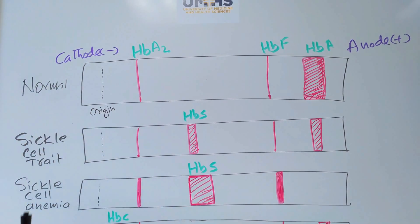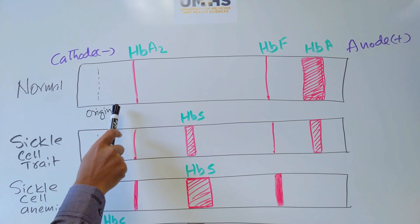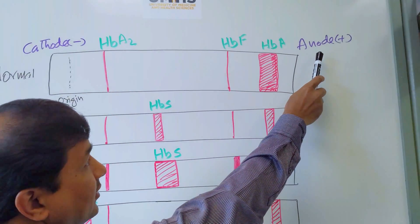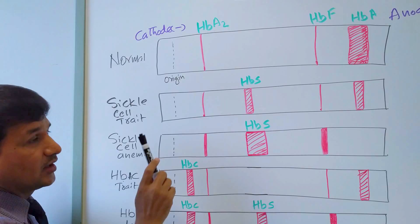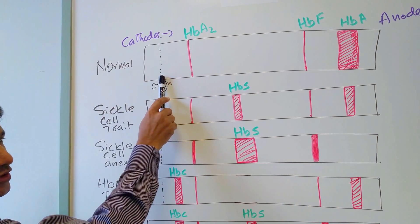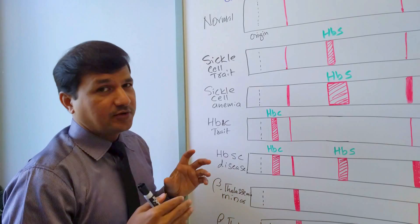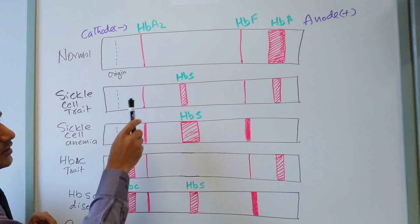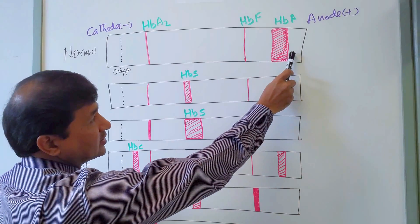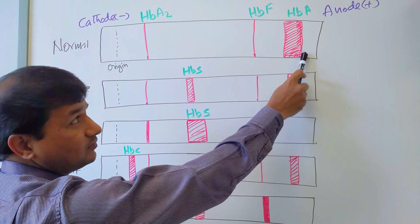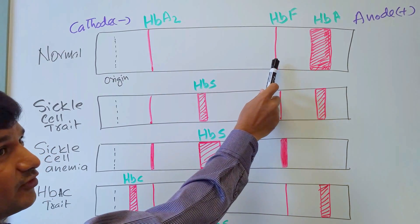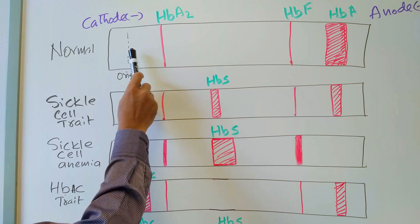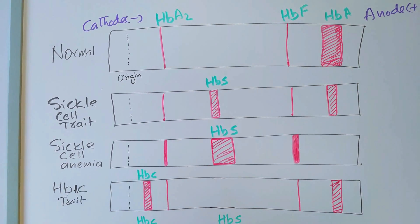In normal hemoglobin electrophoresis, the cathode has a negative charge and the anode has a positive charge. The point of application is in the middle. Depending on the overall net charge of a molecule, it will move accordingly. Normal adult hemoglobin HbA moves all the way towards the anode, HbF is before adult hemoglobin, and HbA2 — the minor adult hemoglobin — is a little closer to the cathode.